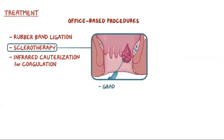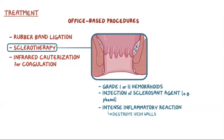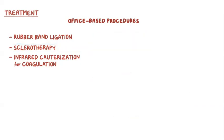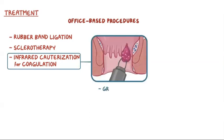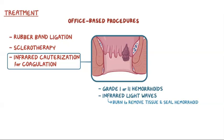Sclerotherapy may be done for grade 1 or 2 hemorrhoids, and it involves the injection of a sclerosant agent, like phenol, into the hemorrhoid. The sclerosant agent causes an intense inflammatory reaction, destroying the vein walls and making the hemorrhoid collapse and shrivel up. Finally, there's infrared cauterization, which is commonly used for grades 1 or 2 internal hemorrhoids and is usually only used when other methods fail. It involves applying infrared light waves onto hemorrhoidal tissues, making a tiny burn to remove tissue and painlessly seal the end of the hemorrhoid. Within a week, the hemorrhoids generally dry up, shrink, and fall off.